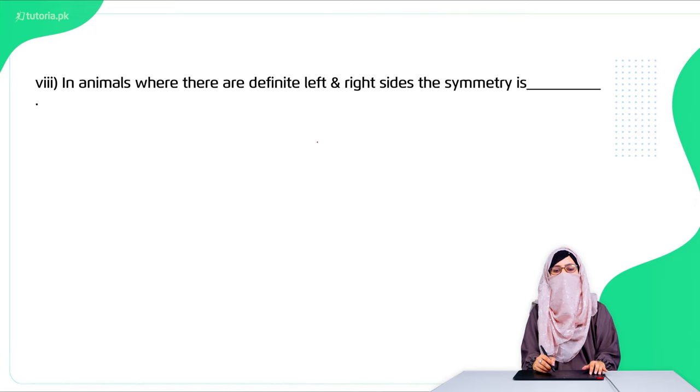Eighth: in animals where there are definite left and right sides, the symmetry is bilateral.